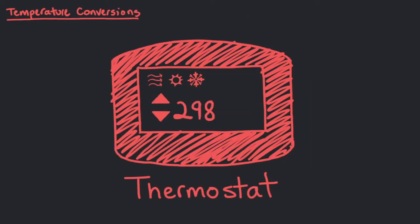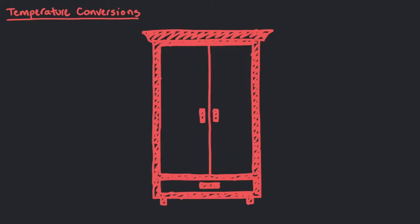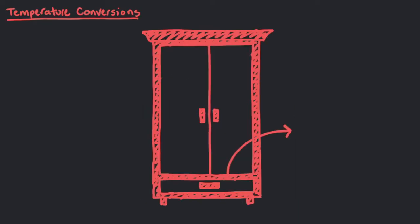He reads 298.15 Kelvin. He's never seen this temperature unit before, but is adamant about cooling the room down. He goes through the cabinets of the room and finds a digital thermometer. The thermometer reads 25 degrees Celsius.